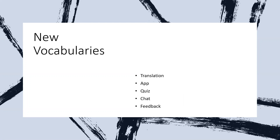Now the other new vocabulary words we have: the word 'translation' means to take a text from a source language to another target language — the process of translating words or texts from one language into another. And then we have the word 'app' or 'application' — it is what we use on our mobile phones, an application especially downloaded by a user to a mobile device.